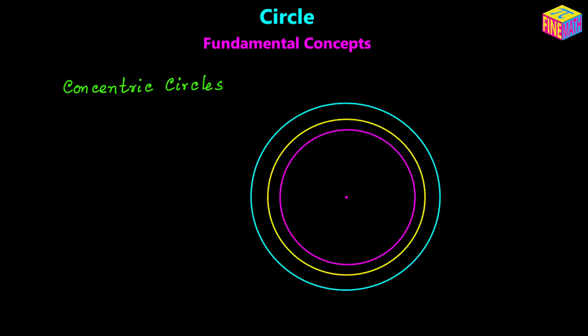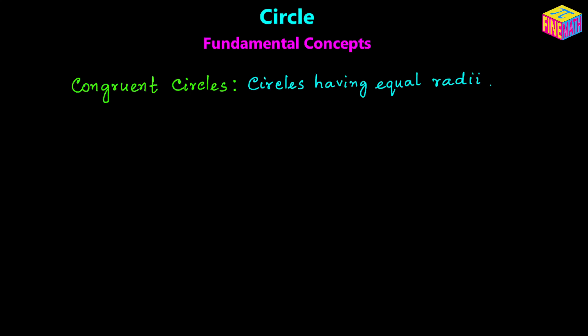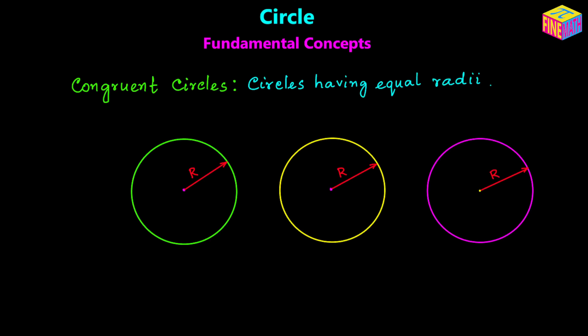Next we are going to discuss congruent circles. Congruent circles are a group of circles — two or more — having the same radius but different centers. Here I have three circles in the diagram, each with a different center but the same radius r. Different circles having the same radius are called congruent circles, sometimes also called equal circles — similar to the concept of congruent triangles, they cover the same two-dimensional space just at different locations.